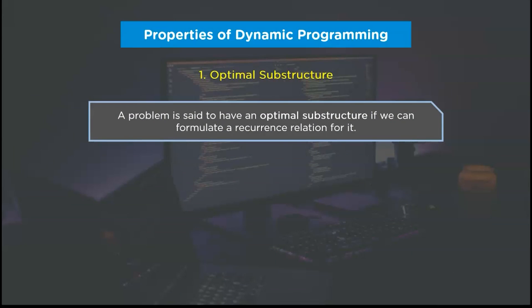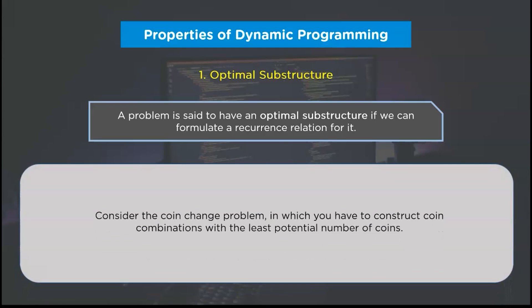The first property is optimal substructure. If we can establish a recurrence relation for a given problem, then it is said to have an optimal substructure. To understand this property, let's look at an example — the coin change problem, which is one of the most famous DP problems. In this problem, we have to construct a coin combination with the least possible number of coins resulting in the desired final amount.